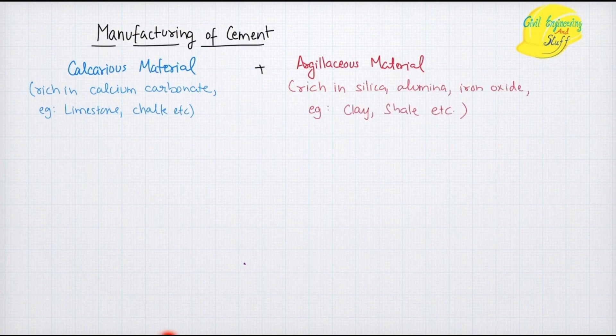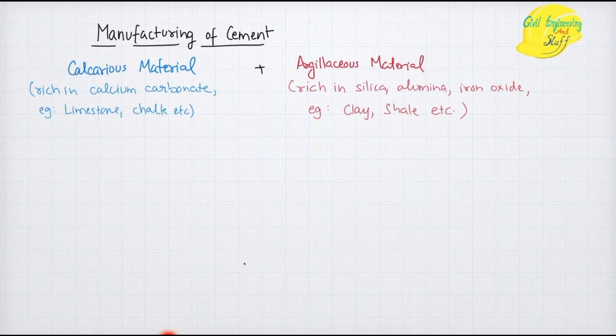Argillaceous materials are the materials that are rich in alumina, silica, and depending upon the type of resource material, also rich in iron oxide. Examples of argillaceous materials can be clay, shale, etc. So when your calcareous material is mixed with argillaceous material at a very high temperature — around 1450 degrees Celsius...